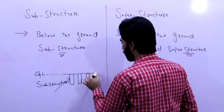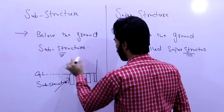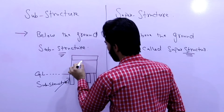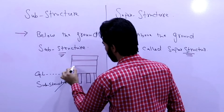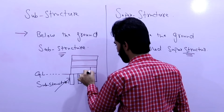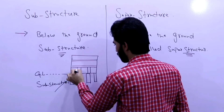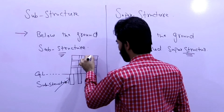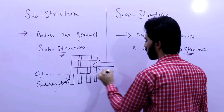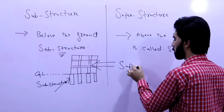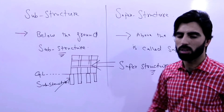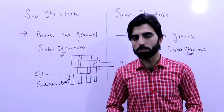Above the ground level there are multi-stories — you can see these are slabs, our floors, and these are columns. This portion above the ground is called superstructure. So to summarize: below the ground is called substructure and above the ground level is called superstructure.